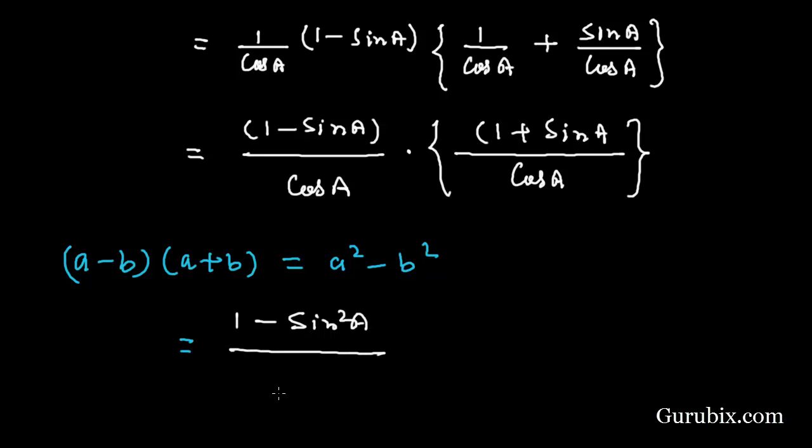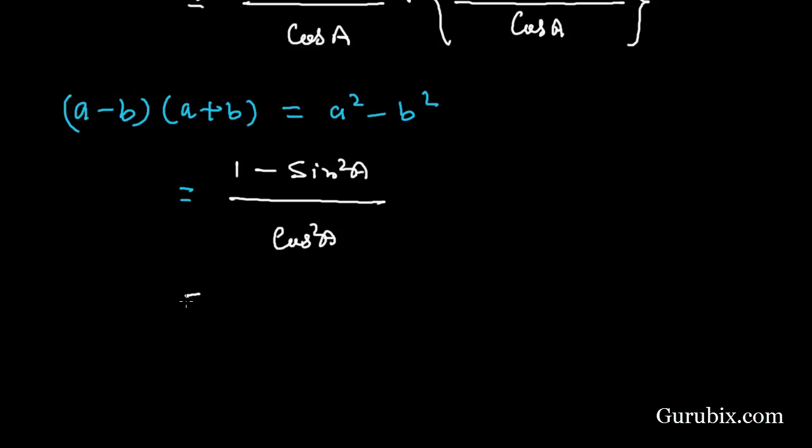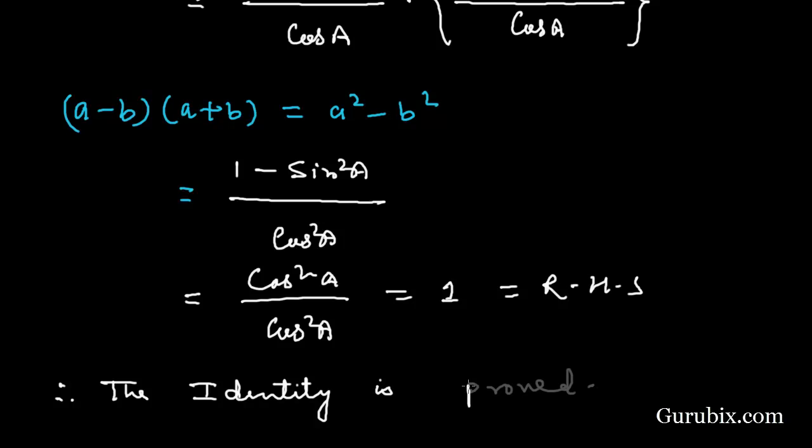And in denominator we have cos² A. And this 1 - sin² A equals, we know that equals cos² A, and here we have cos² A, and this equals 1, and this equals right hand side. Therefore the identity is proved. So this is the solution of the question, thank you.